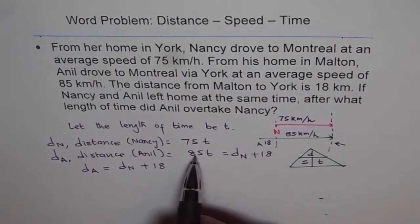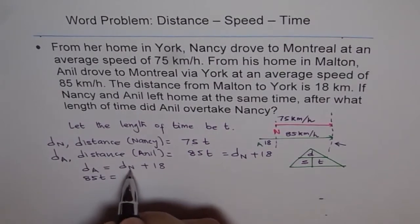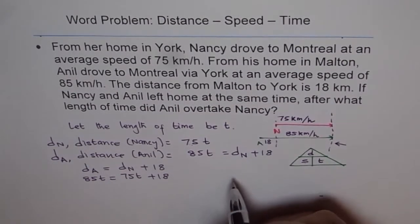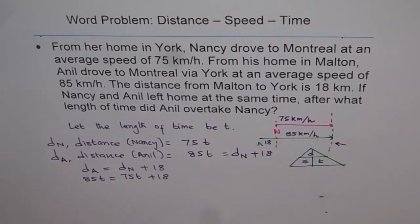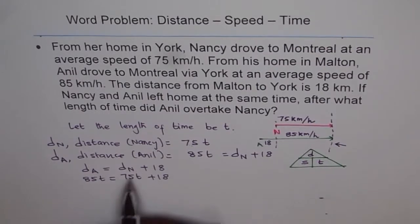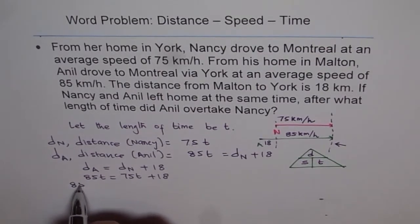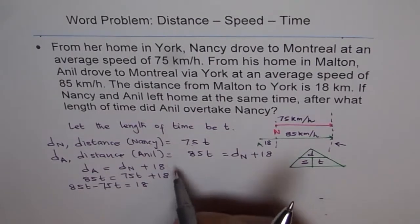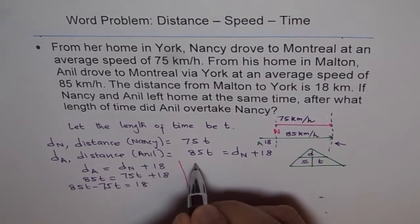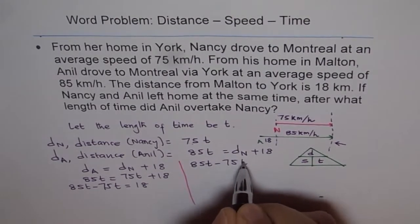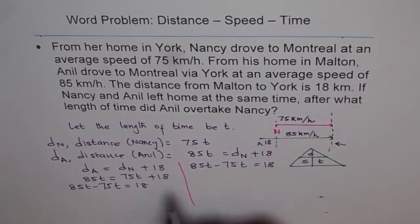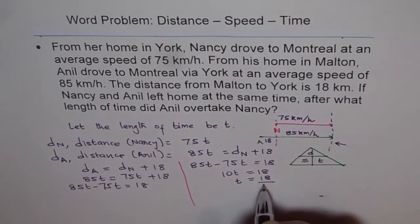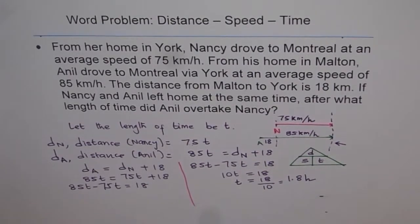Distance covered by Anil is 85T, and distance covered by Nancy is 75T, so the equation is 85T equals 75T plus 18. That is the additional distance covered by Anil during the same time. Bringing variables to one side: 85T minus 75T equals 18, which gives 10T equals 18. Therefore T equals 18 divided by 10, which is 1.8 hours.